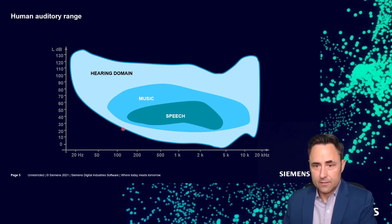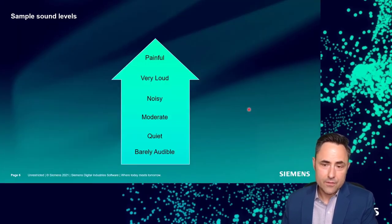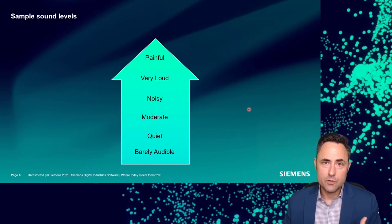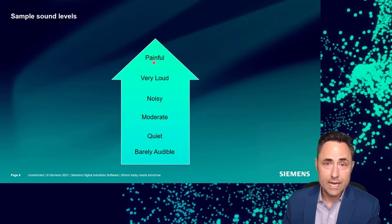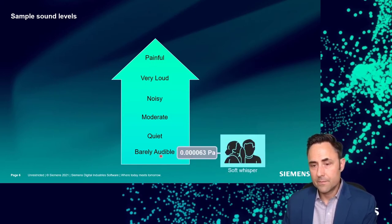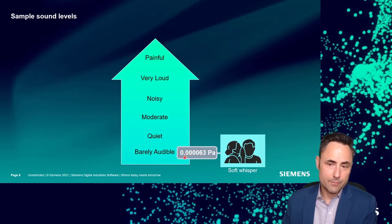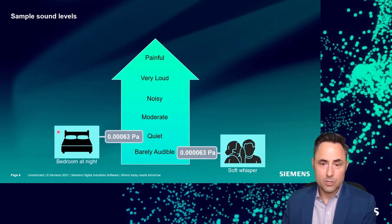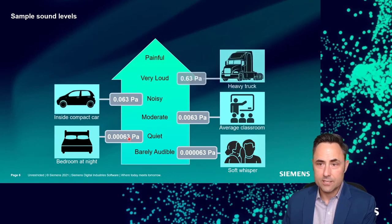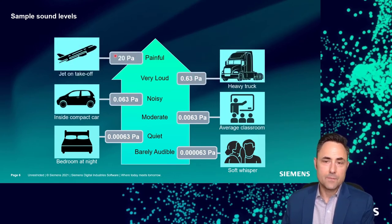So: Texas effect, California effect, eastern seaboard effect. Now, looking at the human hearing range from barely audible to painfully loud and mapping those to actual pressure values in Pascals: a soft whisper registers at about 0.000063 pascals, a quiet bedroom at 0.00063 pascals, a heavy truck at 0.63 pascals, and a jet taking off at 20 pascals.